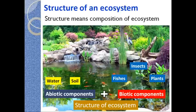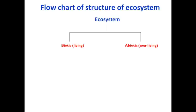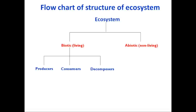Now I would like to show the structure of any particular ecosystem with the help of a flow chart. If we look at the ecosystem, it may have two components: biotic, which are living, and abiotic, which are non-living components. Now there are many living things in any particular ecosystem with different characteristics and behavior, so biotic components can be further subdivided into three major subcategories: producers, consumers, and decomposers.